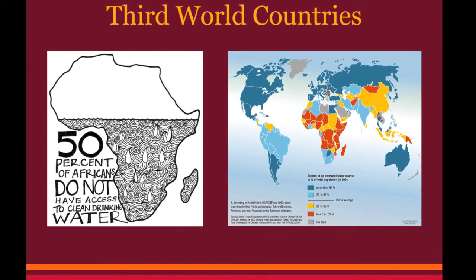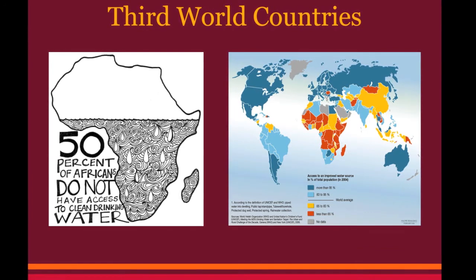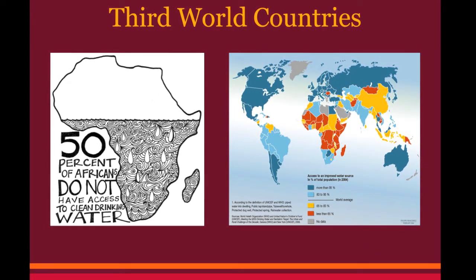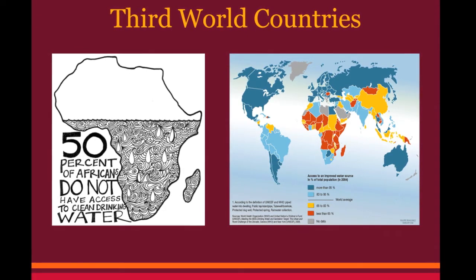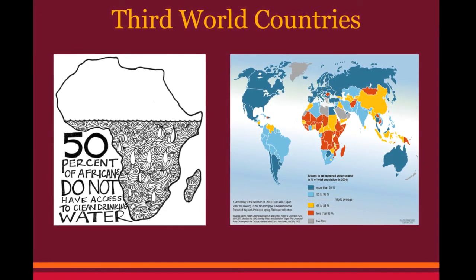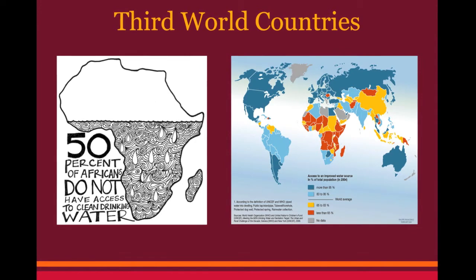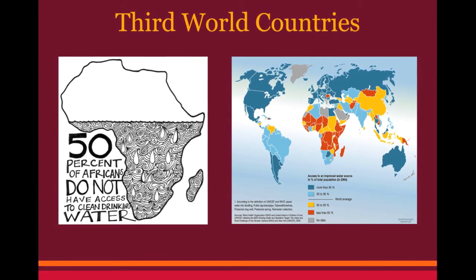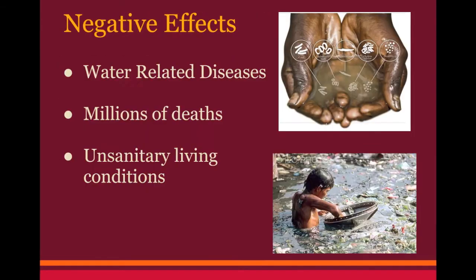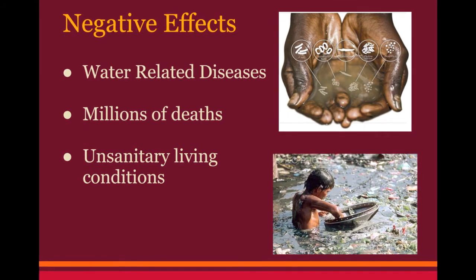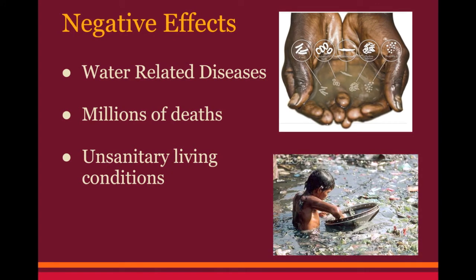Approximately 783 million people do not have access to clean water. This is more than double the population of the United States. These people often have no choice but to use contaminated water in their daily lives. As a result, they often live in poor living conditions and many suffer from death and disease as a result of contaminated water. According to blueplanet.org, 3.41 million people die from water and hygiene related causes every year. Millions of others are often faced with many water related diseases, such as malaria, diarrhea, trachoma, and hookworm.